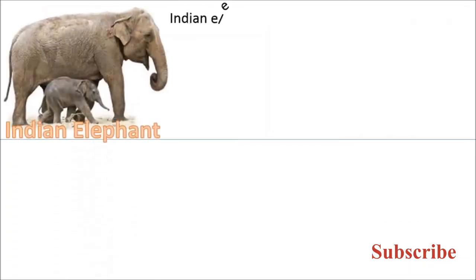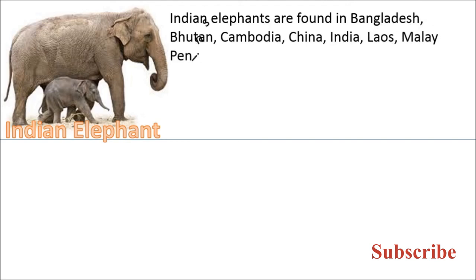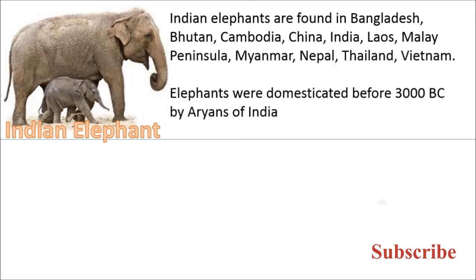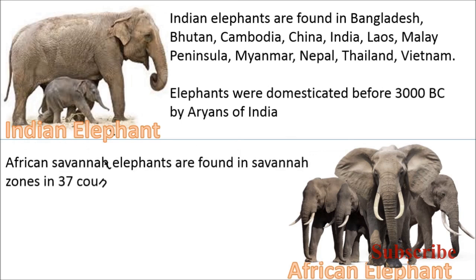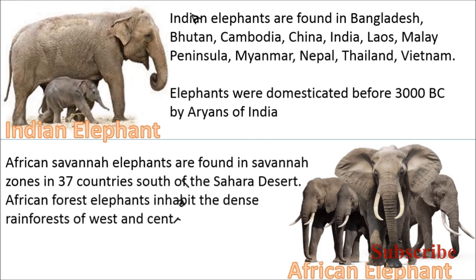Indian elephants are found in Bangladesh, Bhutan, Cambodia, India, Laos, Malay Peninsula, Myanmar, Nepal, Thailand, and Vietnam. Elephants were domesticated before 3000 BC by Aryans of India. African elephants are found in savannah zones in 37 countries south of the Sahara Desert. African forest elephants inhabit the dense rainforests of West and Central Africa. They are not domesticated, but some are used for safari.